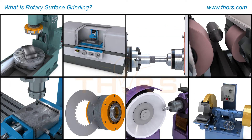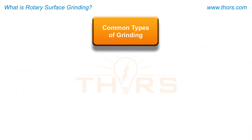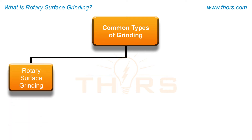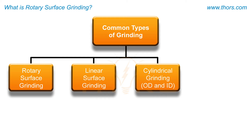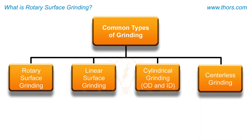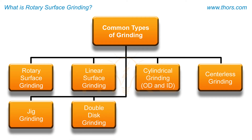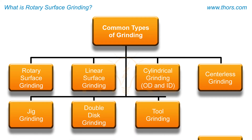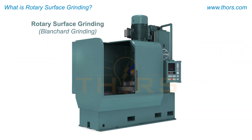Common types of grinding include rotary surface grinding, linear surface grinding, cylindrical grinding for either outer diameter or inner diameter, centerless grinding, jig grinding, double disc grinding, tool grinding, and bench grinding. Rotary surface grinding, or Blanchard grinding, will be addressed in greater detail after a brief overview of the other grinding processes.